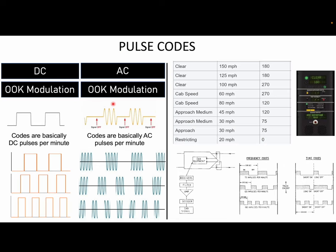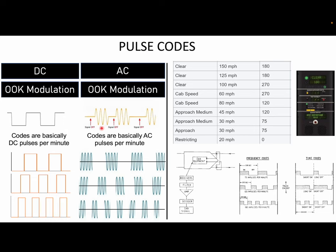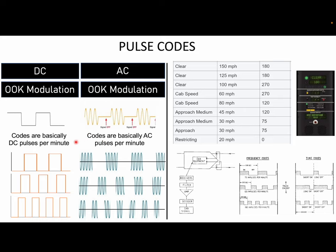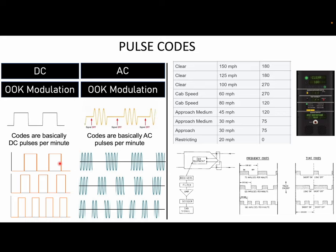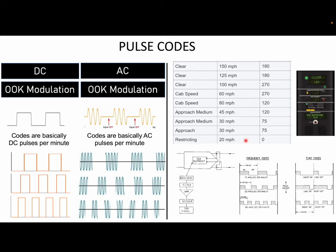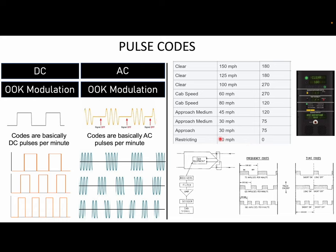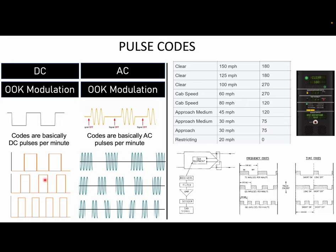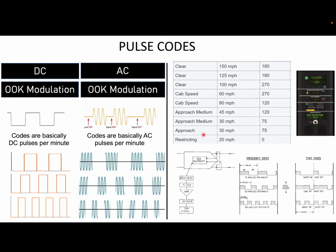Now let's look at the first variation: pulse codes. These pulses are sent either as DC pulses or as AC pulses. The codes are essentially a number of pulses per minute — if you're sending a certain number of pulses per minute, that's one type of code; if you're sending more pulses per minute, that's a different code. For example, sending no pulses means the train is driven at a maximum speed of 20 miles per hour. If you are sending 75 pulses per minute, it would interpret that as a speed limit of 30 miles per hour.